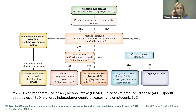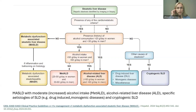The guideline provides an algorithm for diagnosing MASLD. The most important step in an individual with identified increased liver fat is to assess cardiometabolic criteria and alcohol consumption. If alcohol consumption is low, then the diagnosis of metabolic dysfunction associated liver disease is probable.